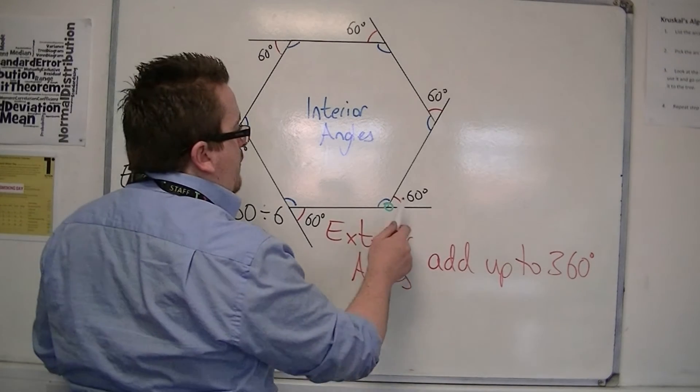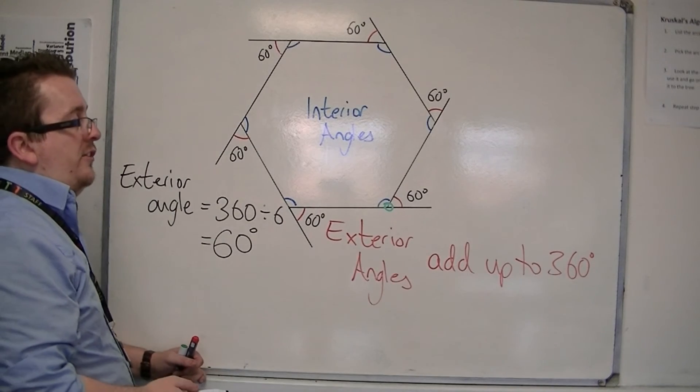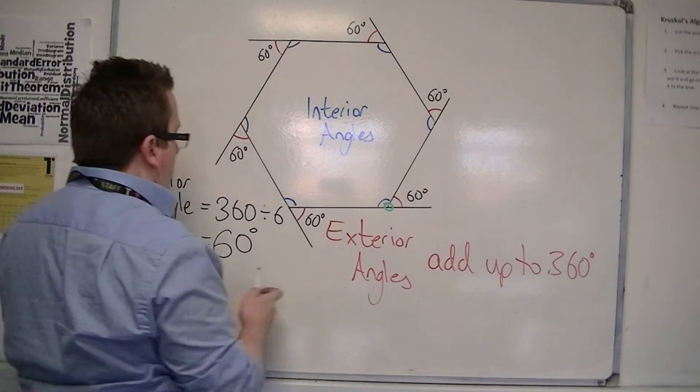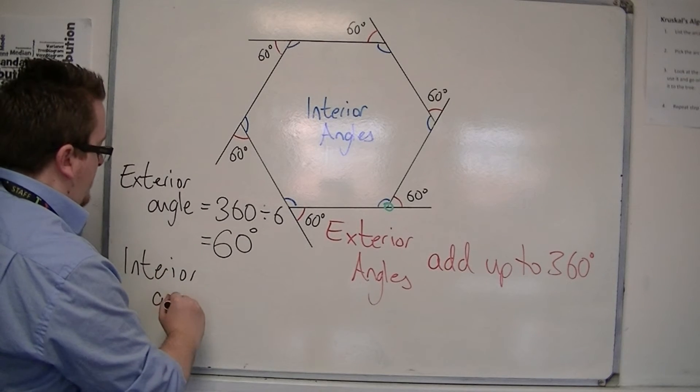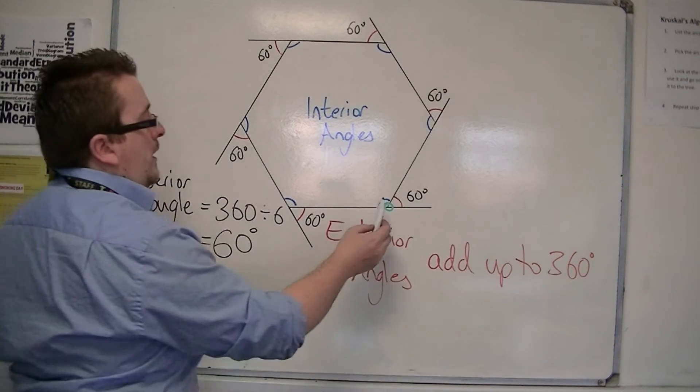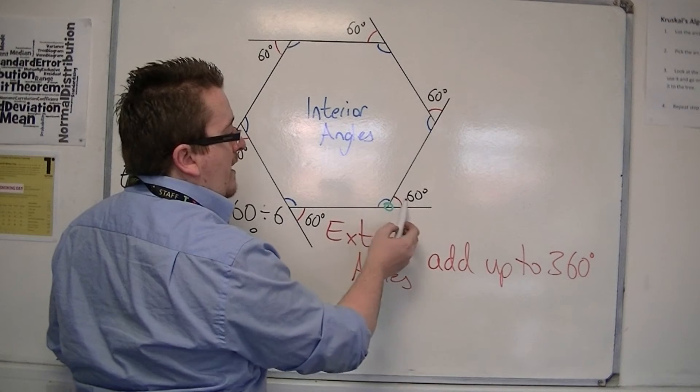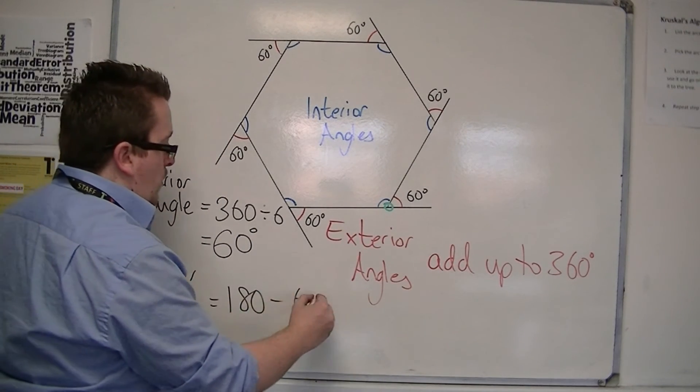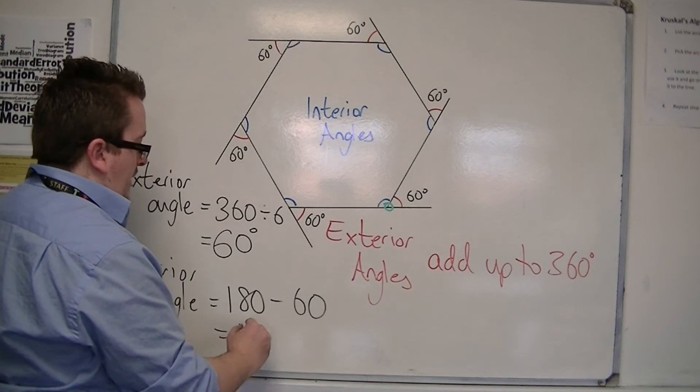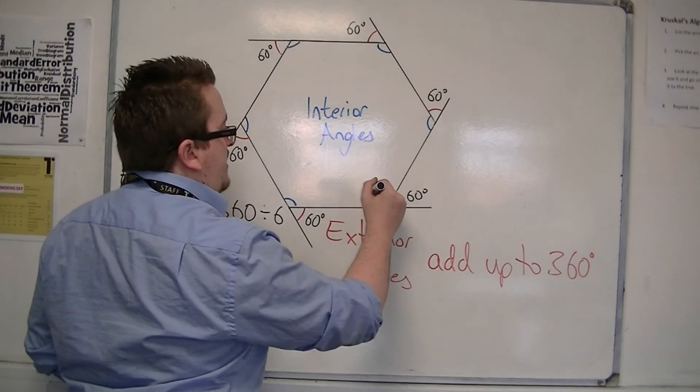So if each of the exterior angles is 60 degrees, then the interior angle can be found because the exterior angle and interior angle are on a straight line. So the interior angle must be 180 take away that 60. So each one must be 120 degrees.